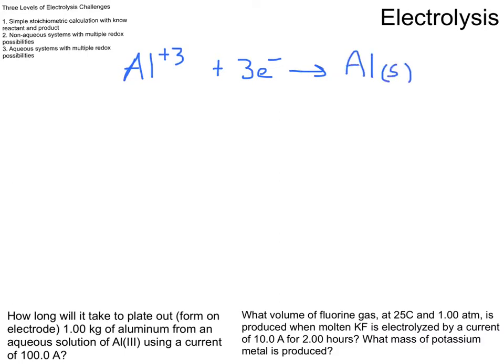And that's going to get reduced at the cathode by three electrons to form elemental aluminum. I'll put elemental solid there so it's clear that we're forming elemental aluminum. So what I want to know is how much time it's going to take me to do this particular chemistry.